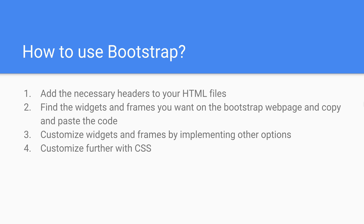So let's say we wanted a couple of buttons in our web page. We would simply go to the Bootstrap web page, find where the buttons are stored and all of the information about them. We can choose the kind of customization we want and then literally copy and paste the code right from the web page into our own HTML file.